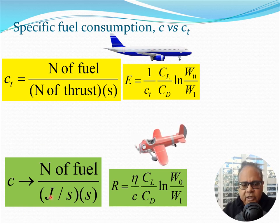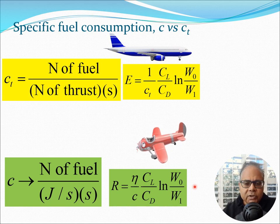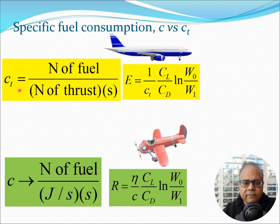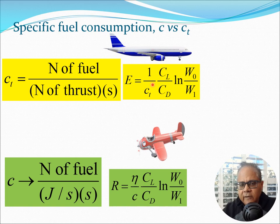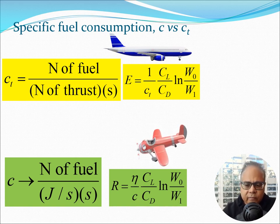If we see here you will see that this is joule per second into second, or this is essentially joule, that is Newton into meter. Newton, Newton cancel out so you get 1 by meter, and that goes up so range comes out in meter. So essentially these are all dimensionally consistent values. For the propeller aircraft you should use C which is defined in terms of power, and for the jet aircraft use CT which is defined in terms of thrust, and you get the similar looking formulas but the answers are in terms of different units.